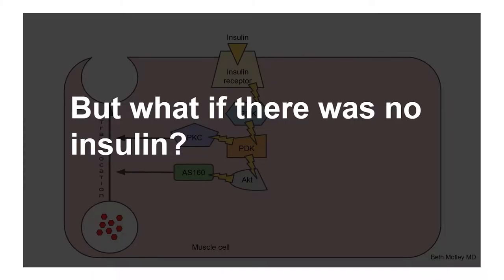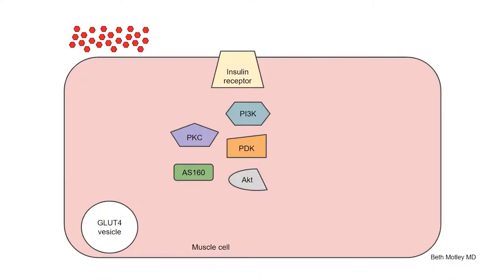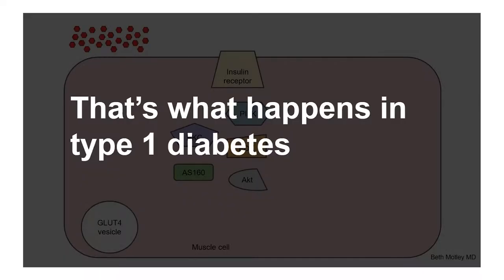But what if there was no insulin? Quite simply, if we don't have the key to unlock the door, sugar is going to build up outside the cell. That's what happens in type 1 diabetes, which is not the case in most people.